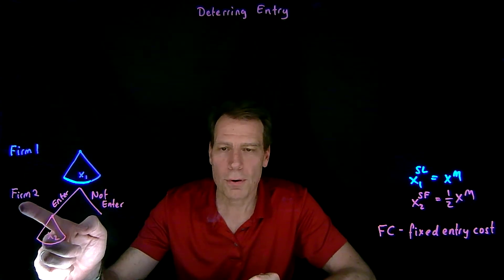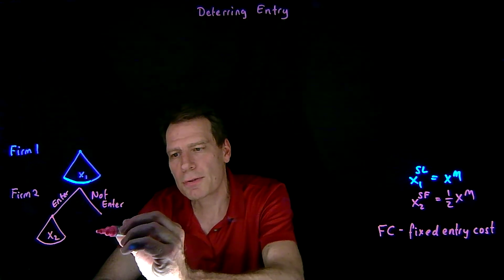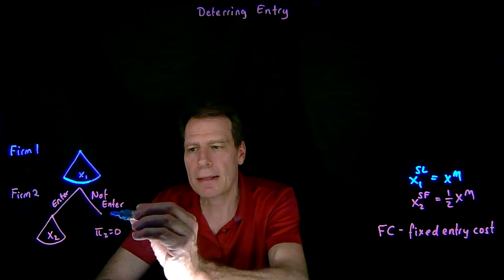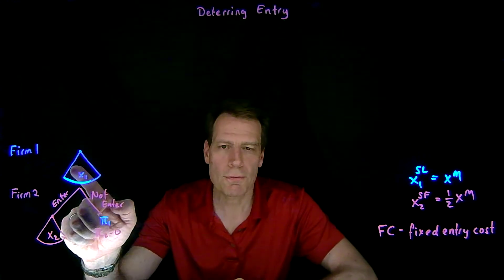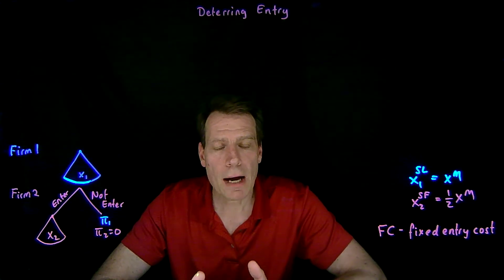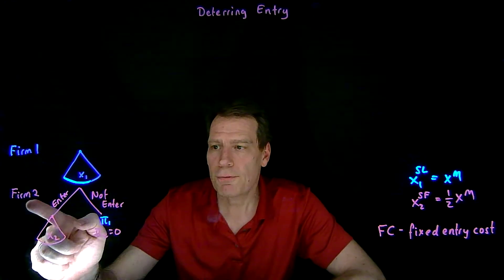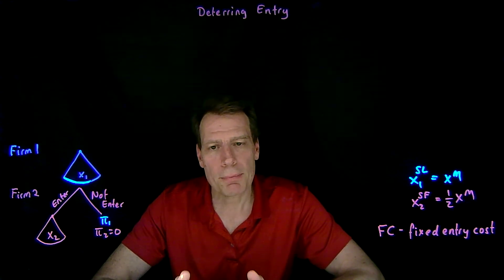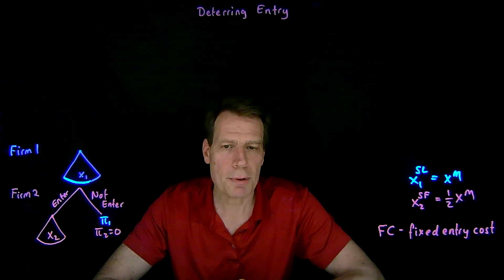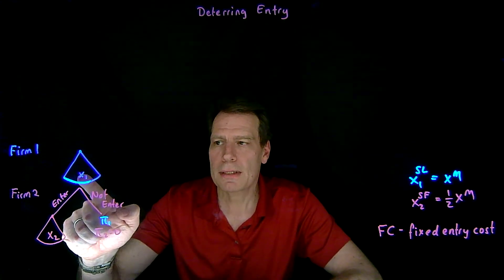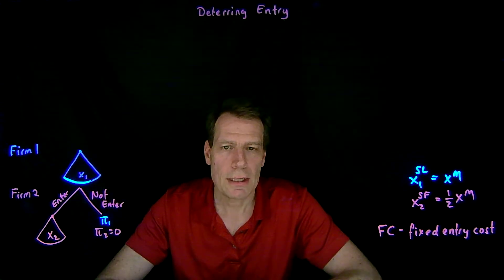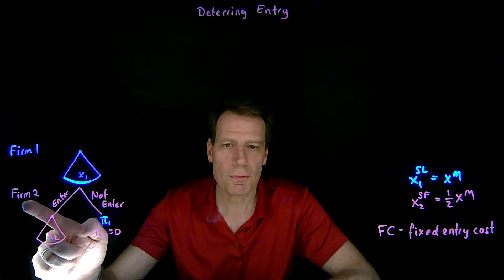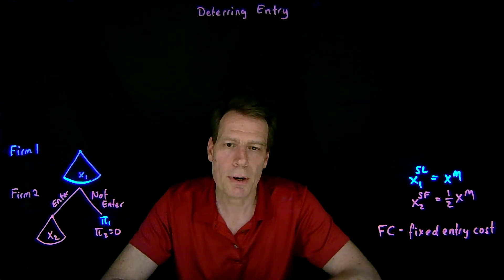If firm 2 decides not to enter, its profit is just going to be equal to zero. But firm 1's profit is going to depend on how much it produced in the first stage. If it produced the monopoly quantity and firm 2 did not enter and add any output, then the price will be the monopoly price and the firm will make the monopoly profit. But it may be that firm 1 decides to produce more in the first stage in order to drive down price so that it becomes unprofitable for firm 2 to pay that fixed entry cost and enter the market.